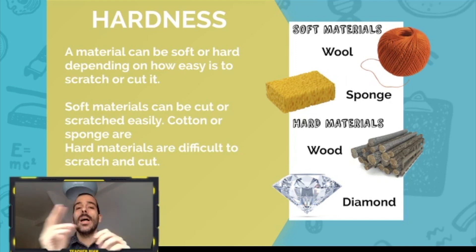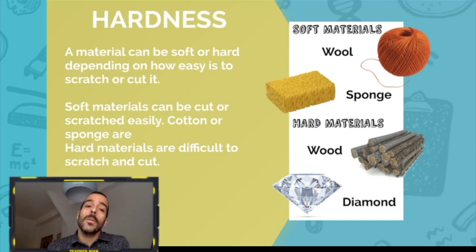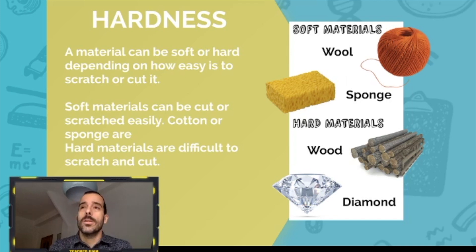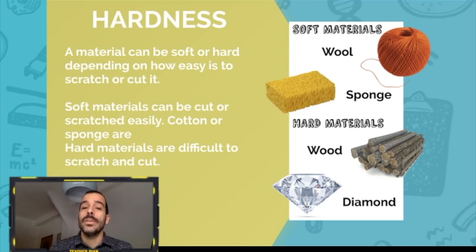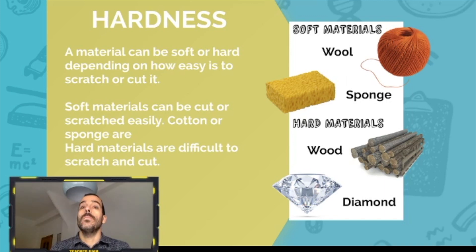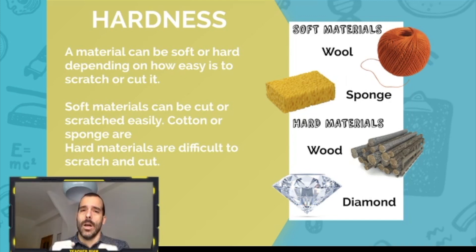Hard materials are difficult to scratch and cut. Examples of hard materials include wood, diamond, and also glass — glass is a hard material as well. So this is hardness, the first of the specific properties of matter.